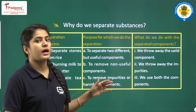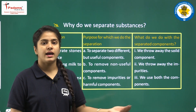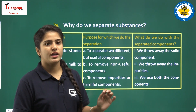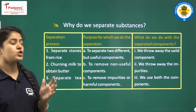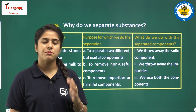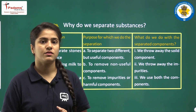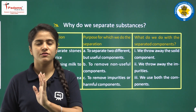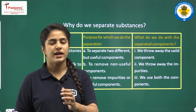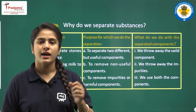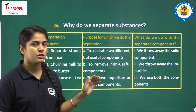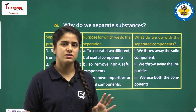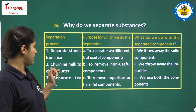This table shows the separating processes, the purpose of separation, and what we do with the separated components. For example, first — separating stones from rice. We do this to get two different useful components, and after separation we throw away the solid substance, meaning we throw away the stones.